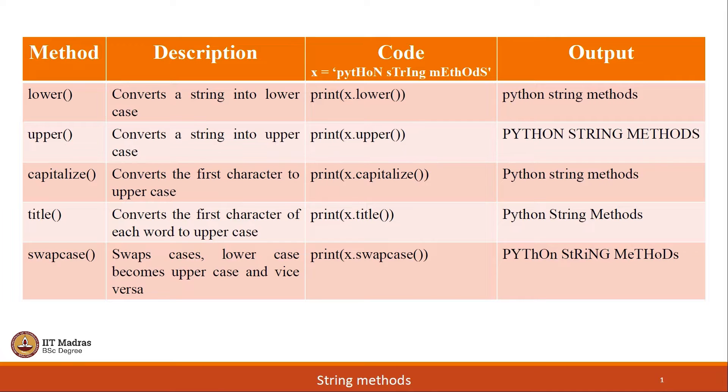In the last two columns, you can see a string example is given and all these string methods are executed using that specific example. And its equivalent output is displayed in the last column. Let us move to next set of string methods.